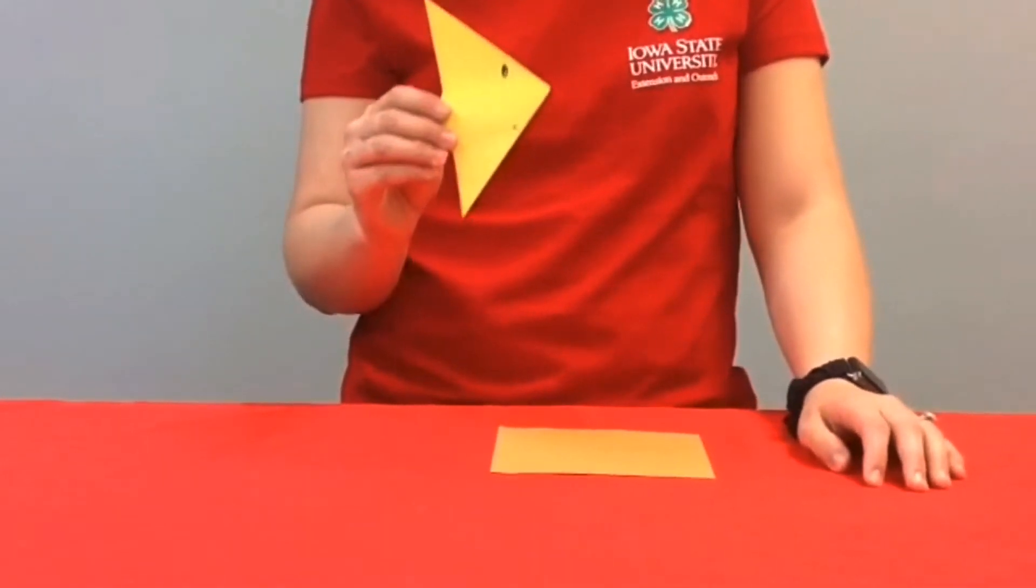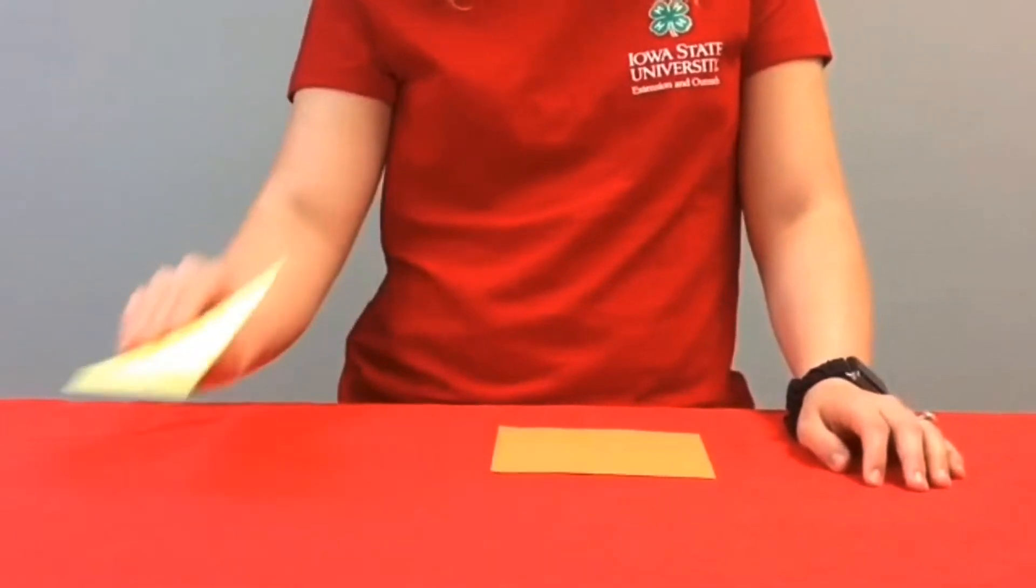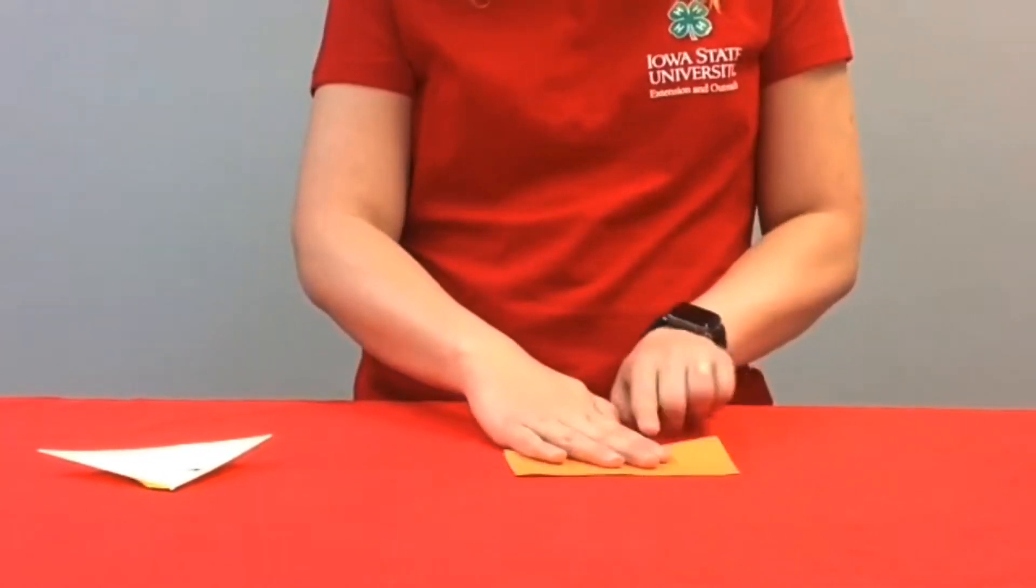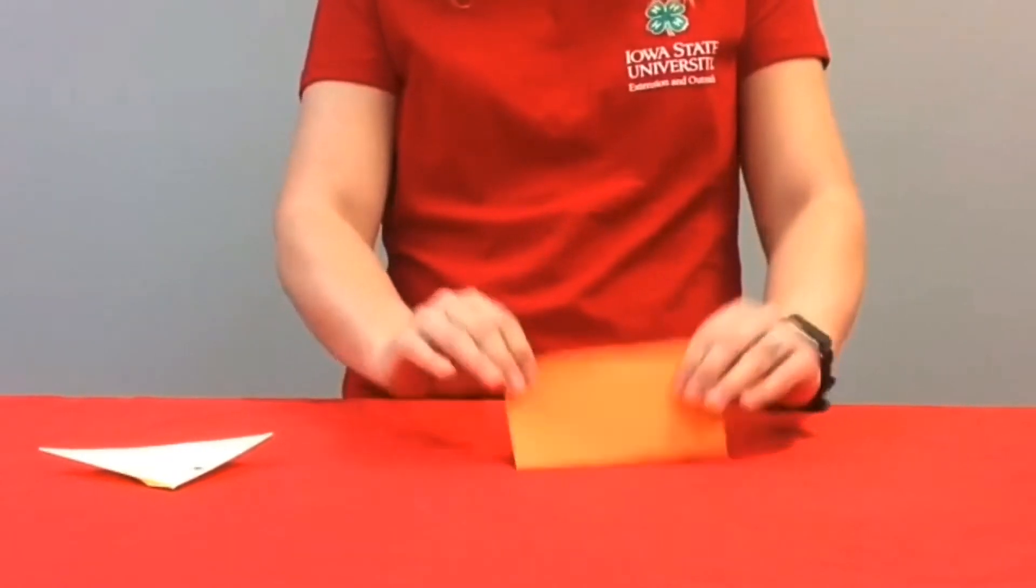Today we will be making a fish out of your origami paper. To start you will fold your paper upward in half and make sure you get a nice crease.